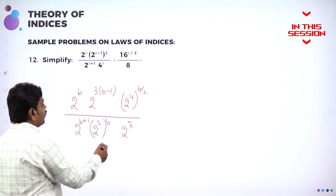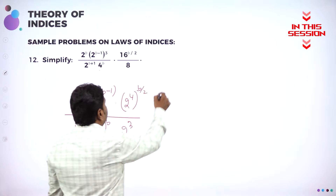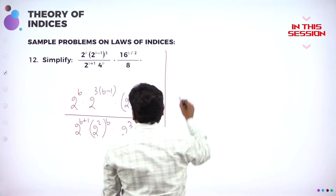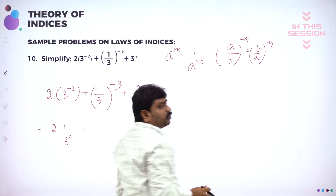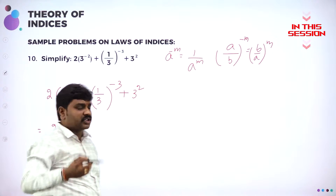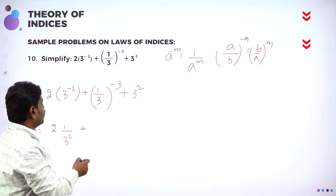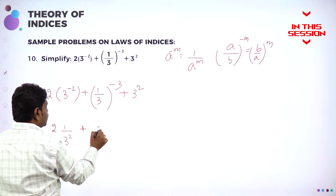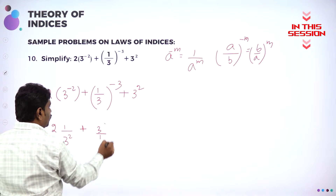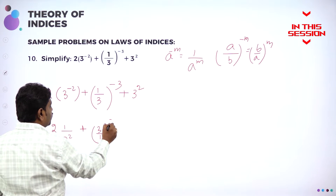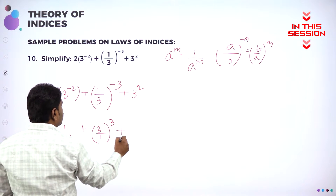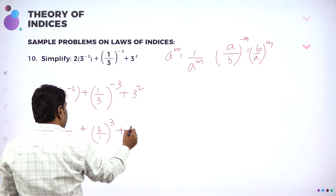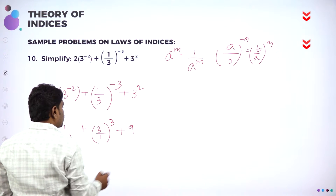So now I can use law of indices and further simplify this. Negative power I can write as positive when I take reciprocal. 1 by 3 can be written as 3 by 1 power. Negative 3 becomes positive 3 and 3 square — you know 3 square is 9.